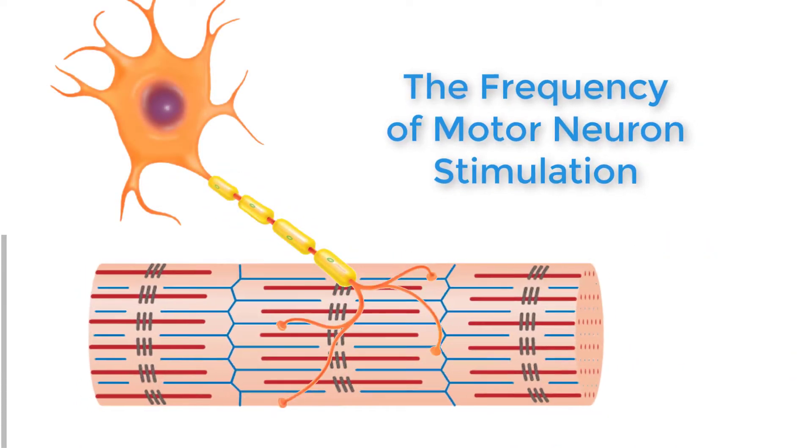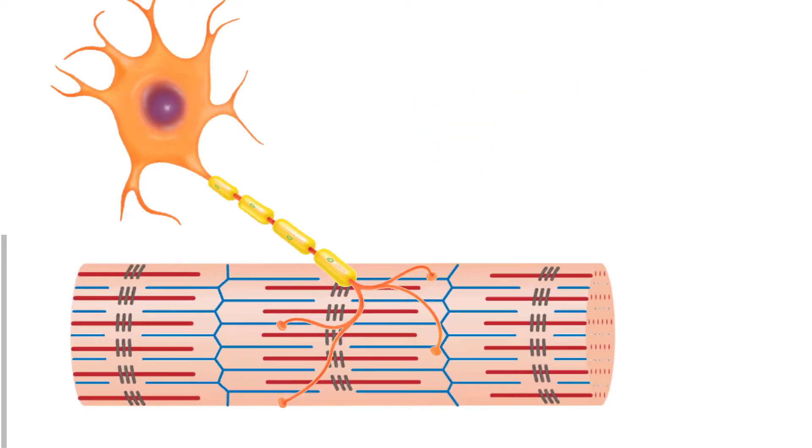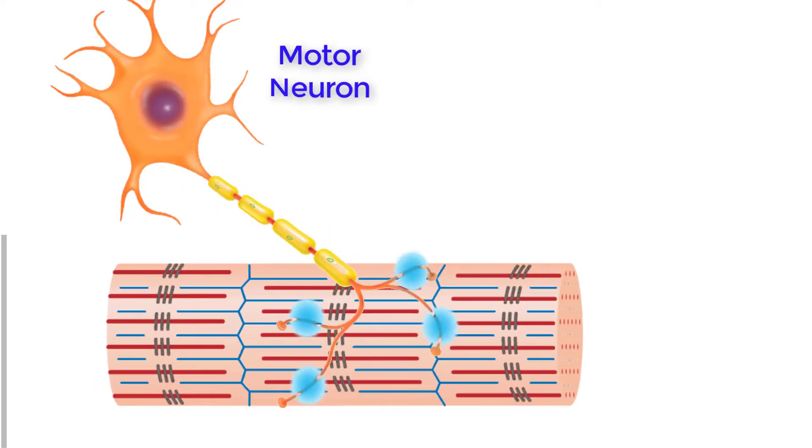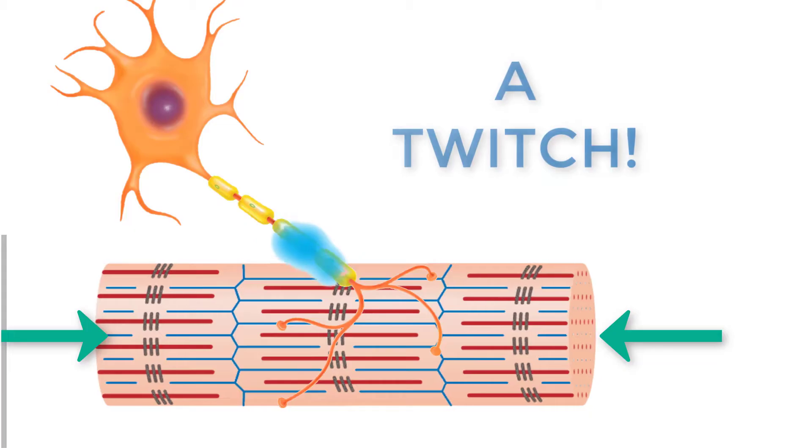The frequency of motor neuron stimulation. A single action potential from a motor neuron will produce a single contraction in muscle fibers of its motor unit. This isolated contraction is called a twitch.